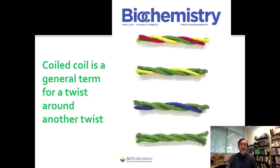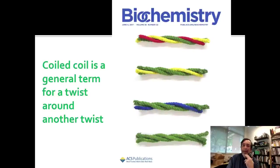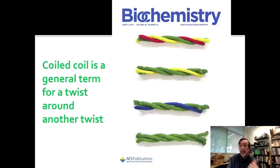Coiled coil is a general term — you can have other kinds, like three-stranded coiled coils. In fact, collagen is a coil of collagen helices. You could refer to collagen as a coiled coil, but you want to be specific about what you're talking about. This journal cover is really about ropes being braided, and there's a particular kind of fibrous protein they were looking at.